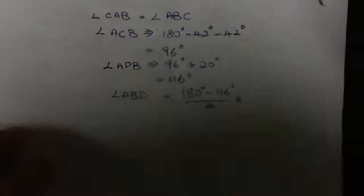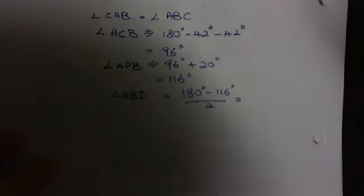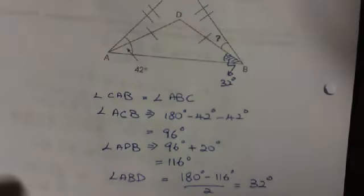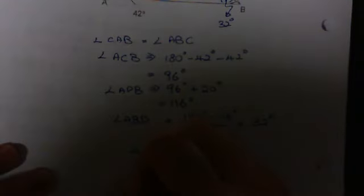Next I have to find angle ABD. Angle ABD is 180 degrees minus 116 degrees, the whole thing divided by 2 because this is isosceles, equals 32 degrees. So this is 32 degrees.